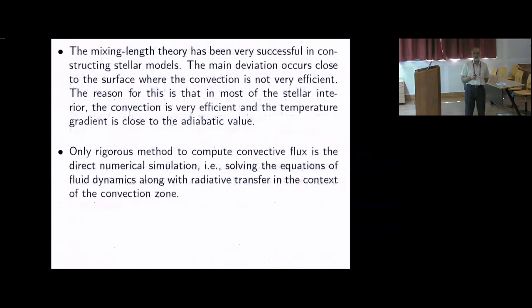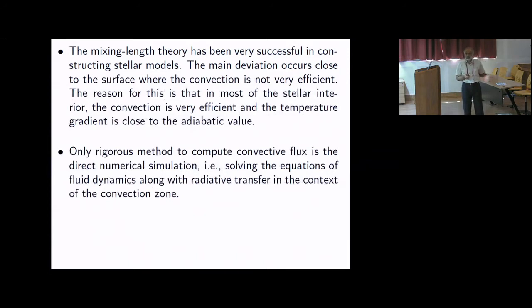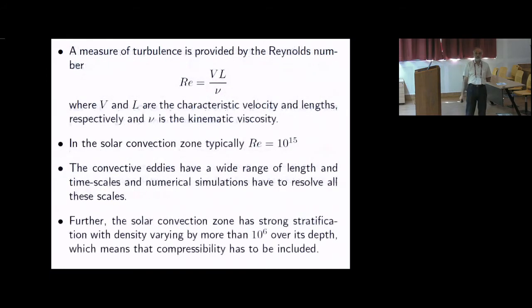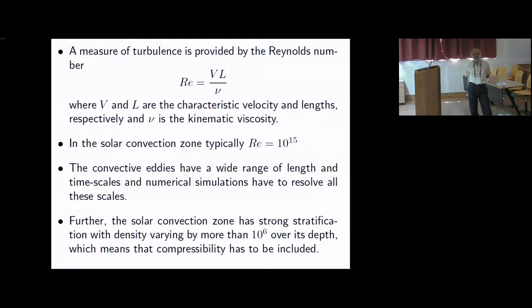The only adjustable parameter is used to get the correct entropy at the base of the convection zone. The only rigorous method to compute convective flux is direct numerical simulation. The main problem is that the Reynolds number in the solar convection zone is about 10¹⁵ — fairly large — and that is why direct numerical simulation does not work effectively. Convective eddies span a wide range of length and time scales, and numerical simulations must resolve all of them.